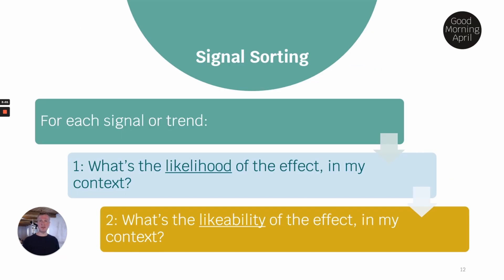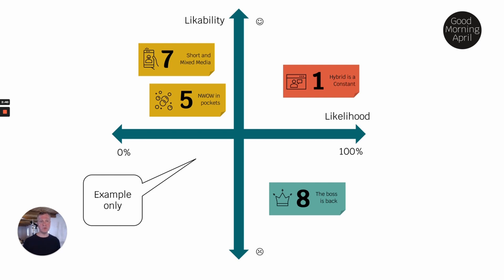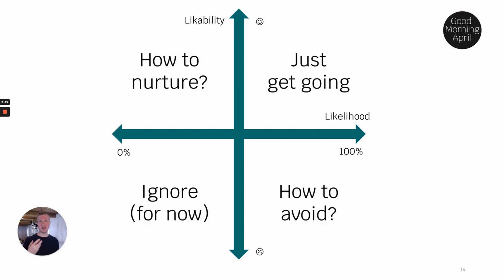When it comes to understanding the possible, plausible, and preferable futures, we use signal sorting. For each of the signals or trends we ask ourselves two questions: what's the likelihood of the effect in my context, and what's the likability of the effect in my context? That gives us a 2x2 matrix with likelihood on one axis and likability on the other, where we place the trends and signals. Based on that, we have something to guide where we invest our time and money.